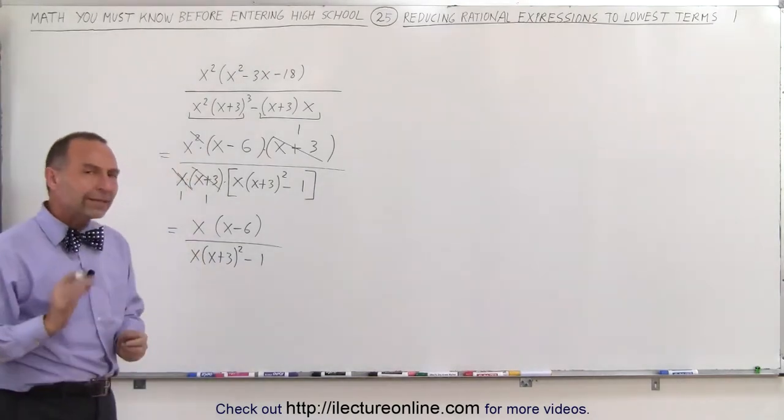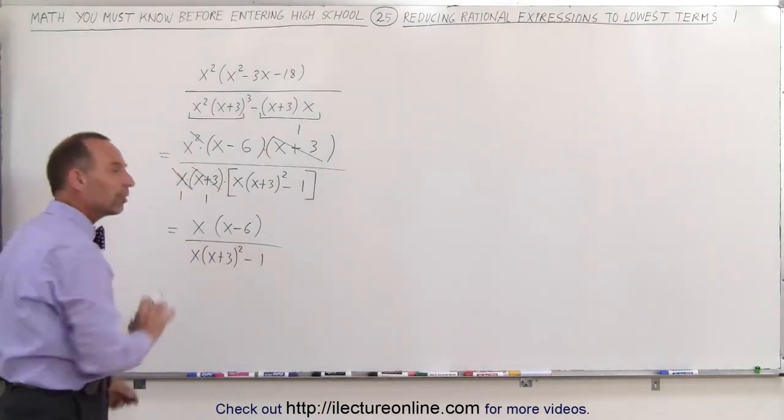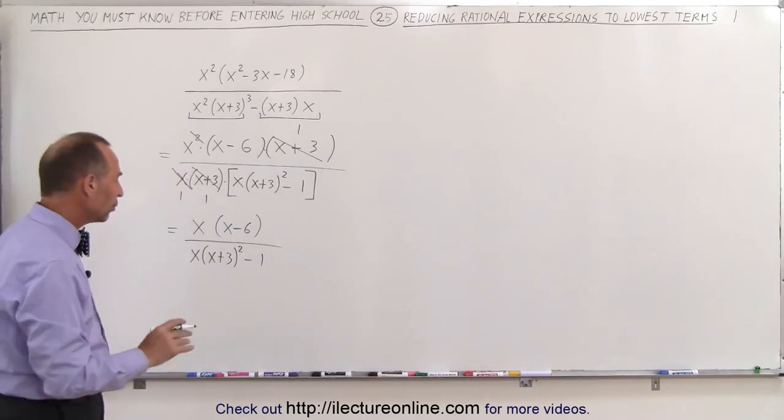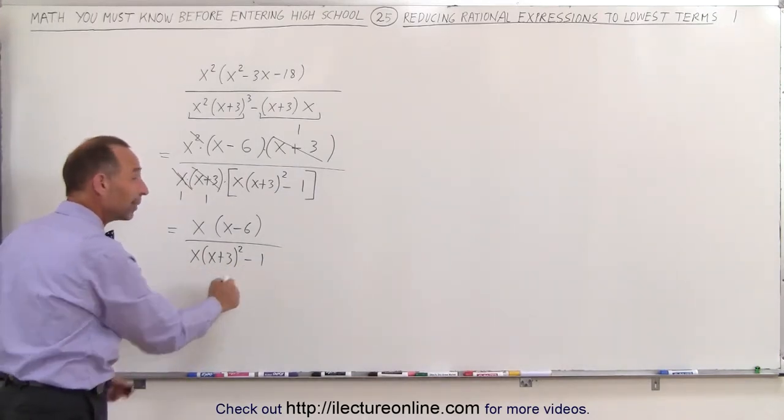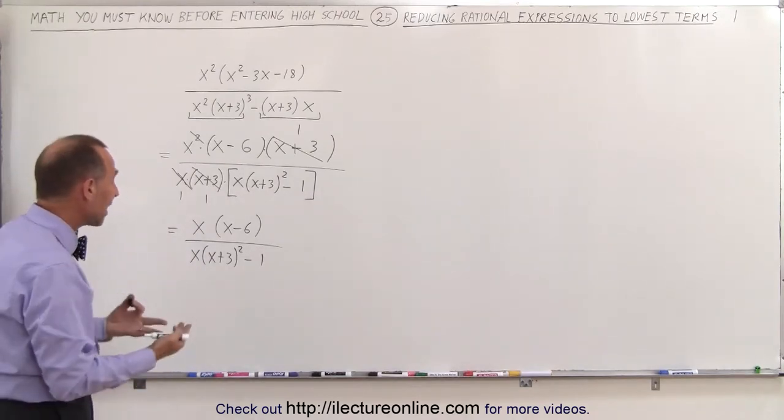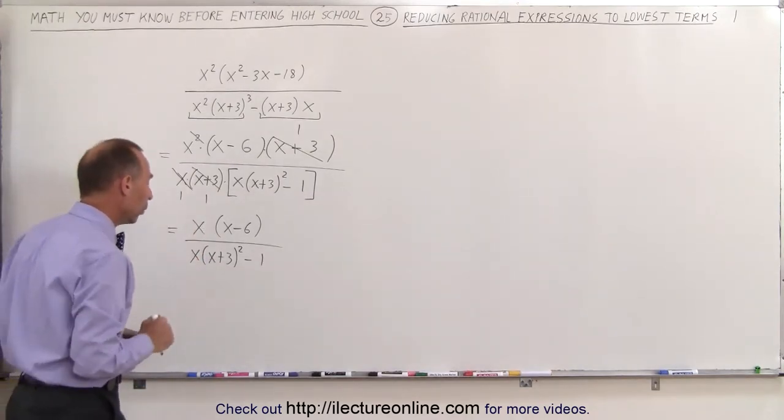Now we're not quite done yet, because perhaps we can factor the denominator even more. So I'm going to do that by multiplying this together, and then subtracting 1 from it, and then see if I end up with something I can factor, so I can simplify things even more.